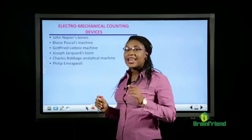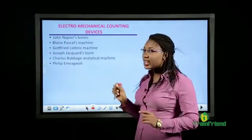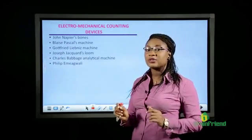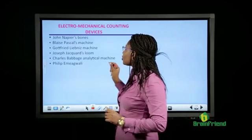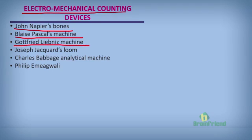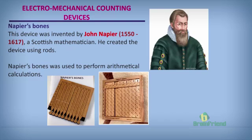Now let's look at the electromechanical counting devices. We have John Napier's bones, Blaise Pascal's machine, Gottfried Leibniz's machine, Joseph Jacquard's loom, Charles Babbage's analytical machine, and contributions made by Philip Emegwali.